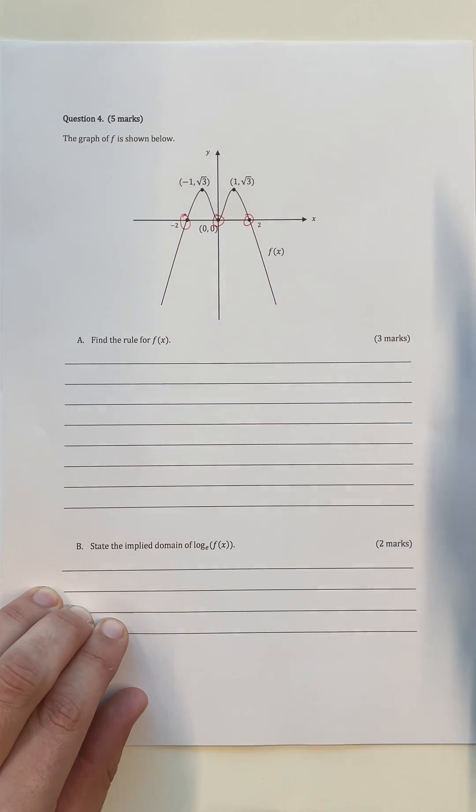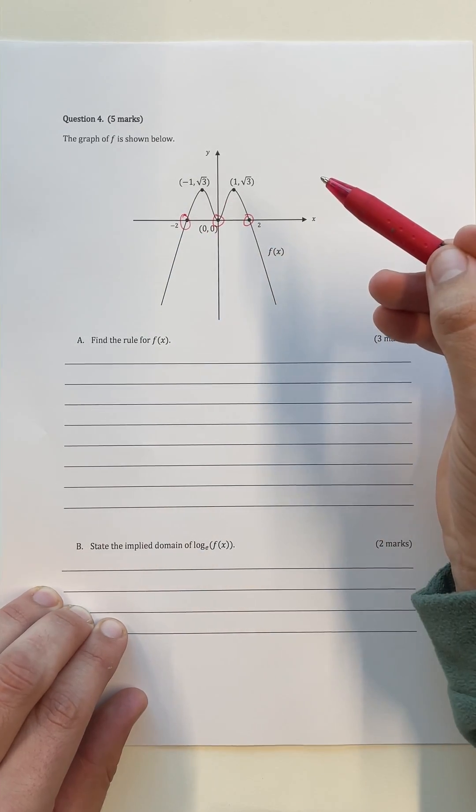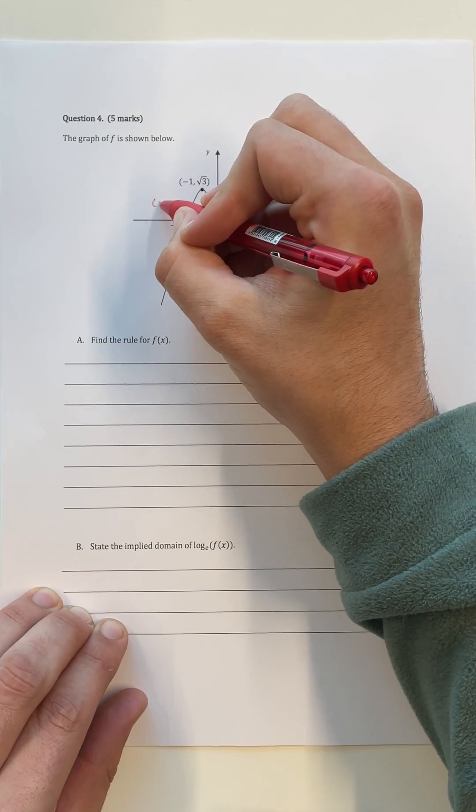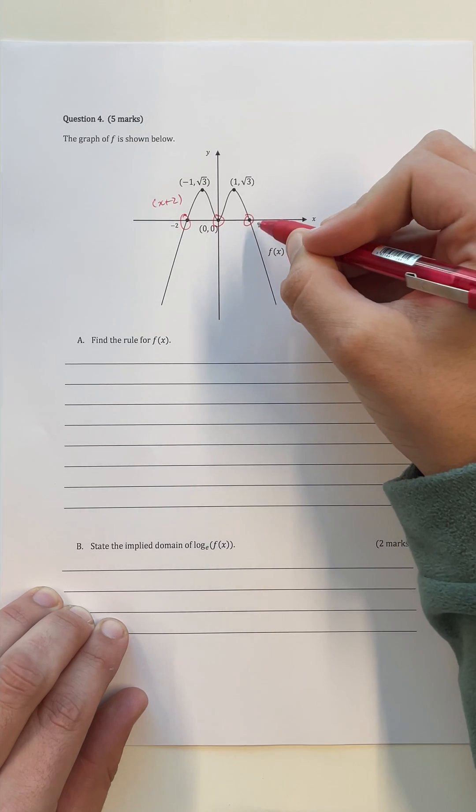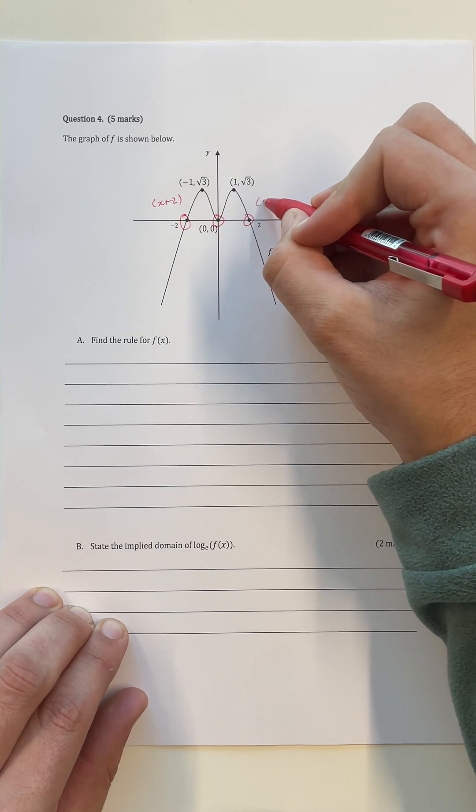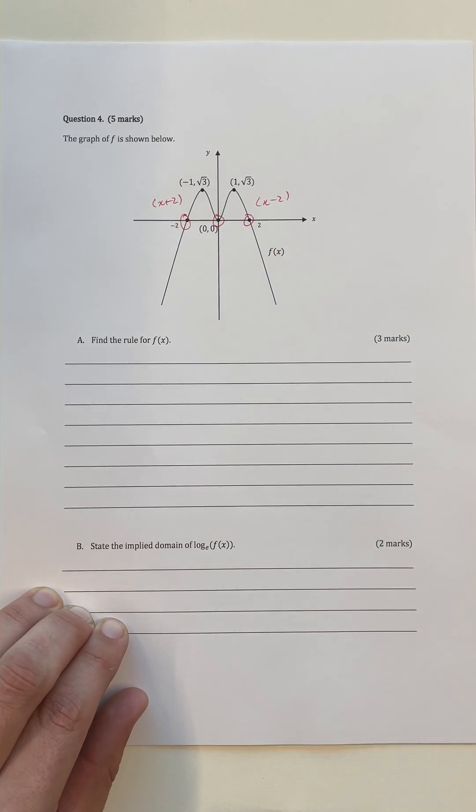We're given three x-intercepts in this case. The first one is at x equals negative 2, so this means that x plus 2 is going to be a factor to our equation. We could do exactly the same thing with x equals 2; we know that x minus 2 will be a factor of our equation as well.